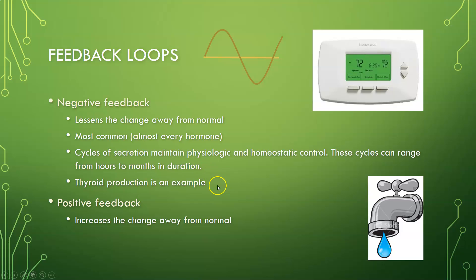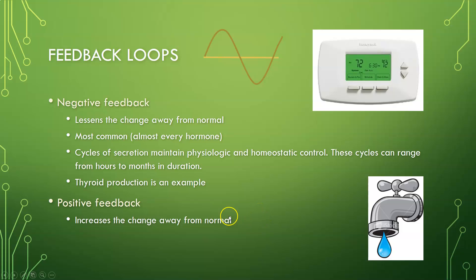A positive feedback loop increases the change away from normal — it goes up and up and up. It is often compared to opening a faucet. Labor hormones are an example: the release triggers more release, and more release, until the baby is born. Clotting is another positive feedback loop.